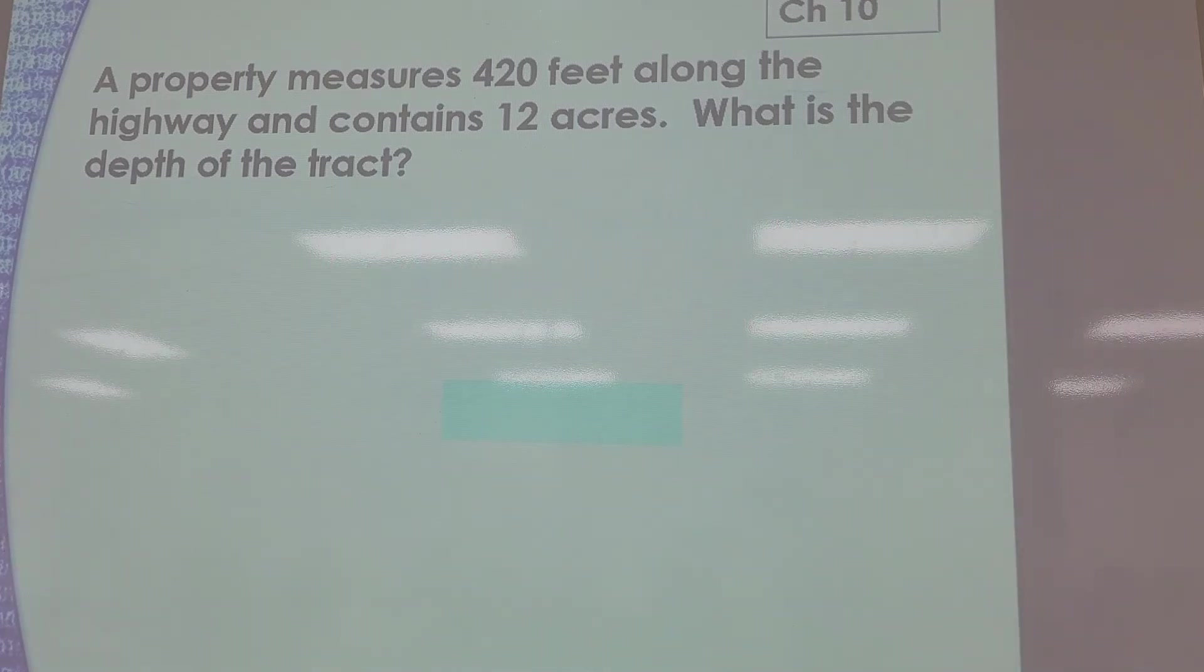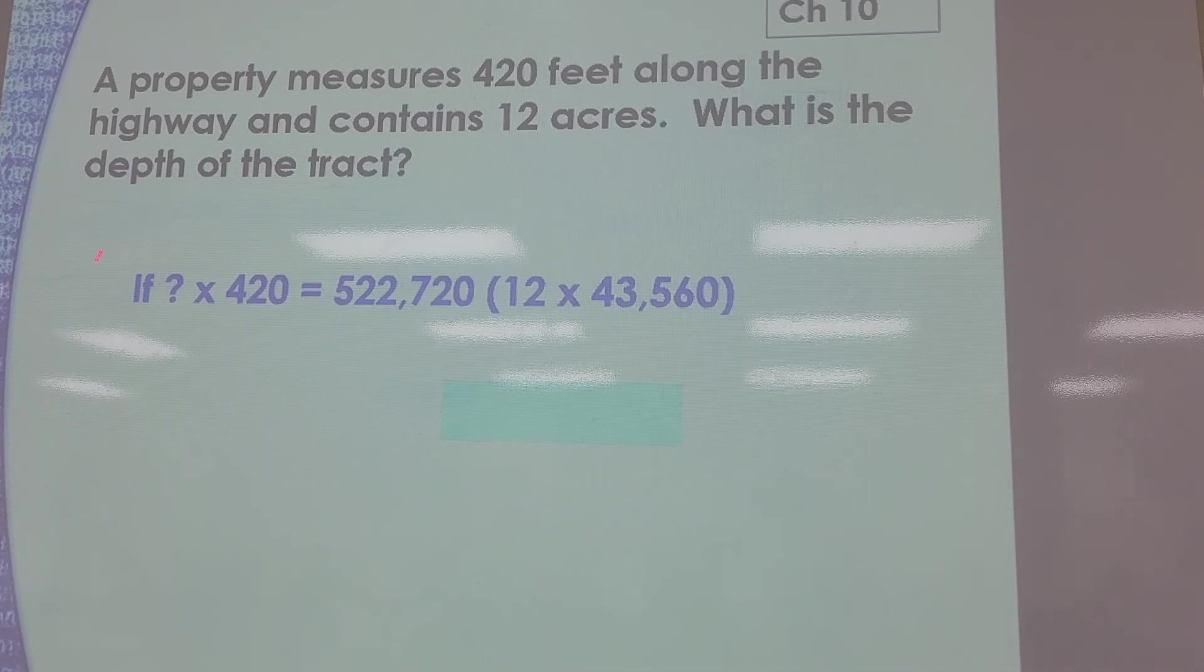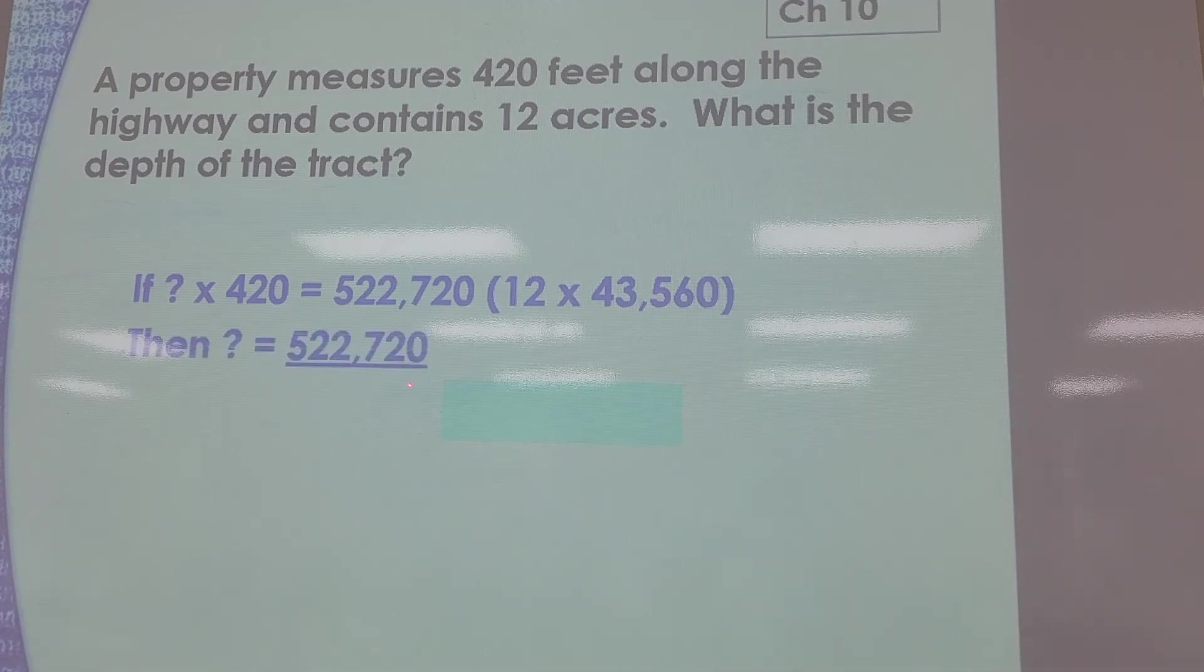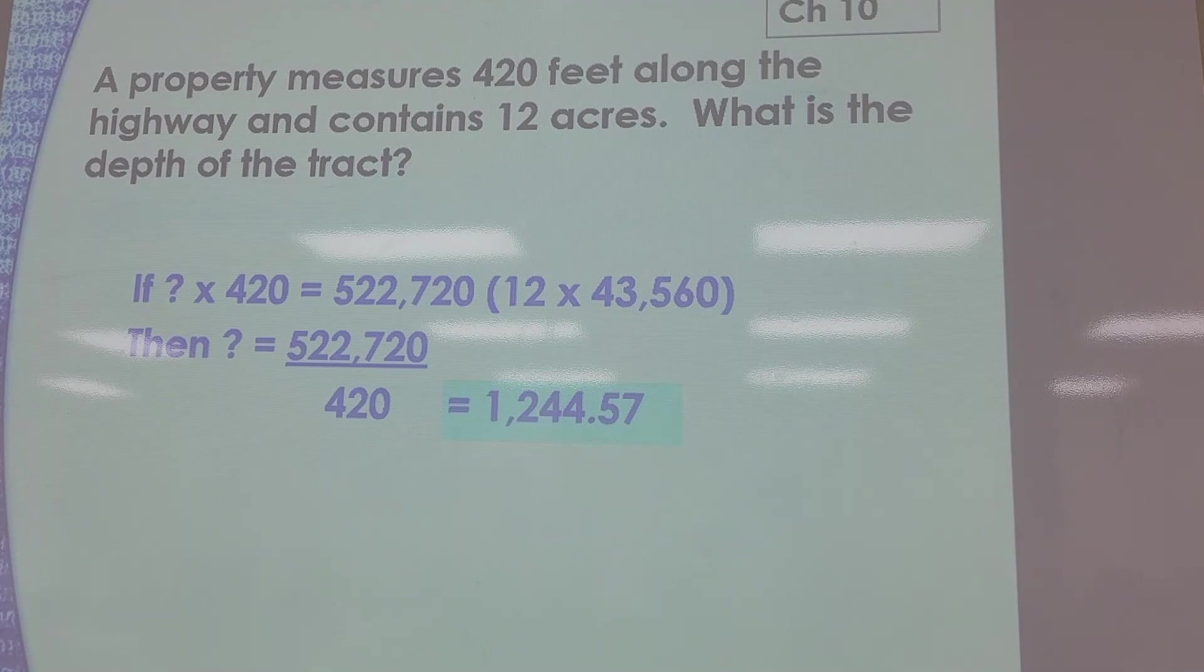But trust but verify, let's take a look. If the unknown times 420 equals 522,720, and how did we get that? By multiplying 43,560 by 12. And then in that case you would have to divide it. If you divide it by the same number, then it will give you the depth. Got it? Yes. Thank you.